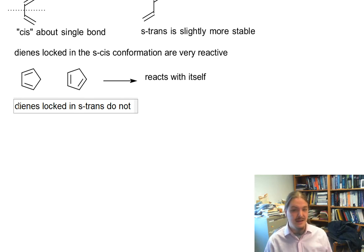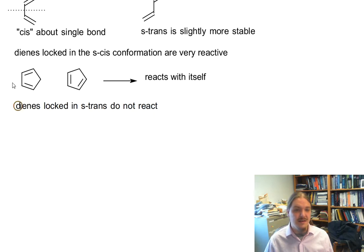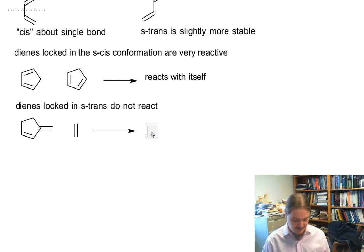Likewise, dienes that are locked in the S-trans conformation do not react at all. And so here's an example of one. I'm going to stick with the cyclopentene theme here. These sort of exocyclic kind of dienes are just not at all reactive. And so even if you were to give it a really supercharged dienophile, and we'll talk about that in the next video, there's generally no reaction.